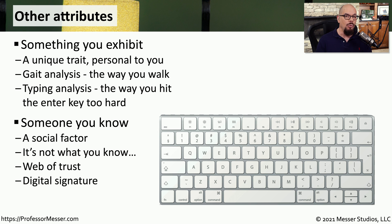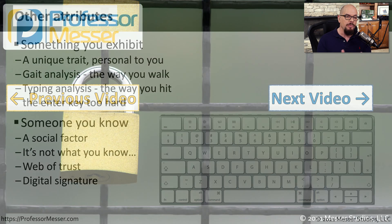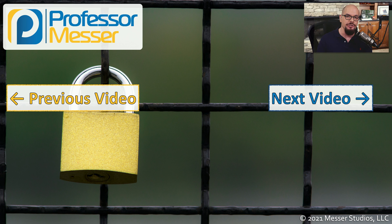Sometimes it's not what you know, but who you know. The attribute of someone you know can help give you a little bit more credibility when you're trying to gain access or authenticate to a system. We use attributes of someone you know in cryptography when we're creating a web of trust, as we do with PGP certificates, or when we're creating a digital signature.